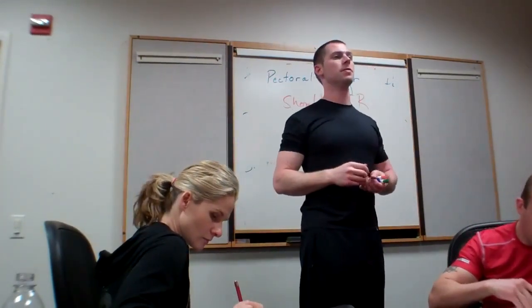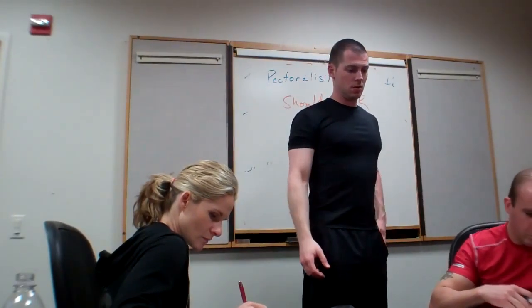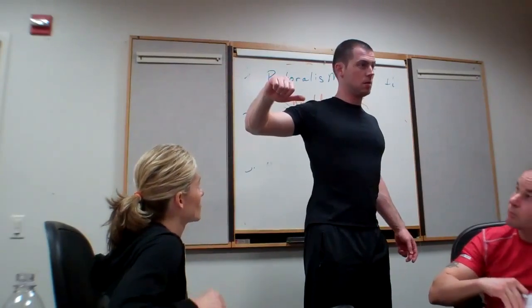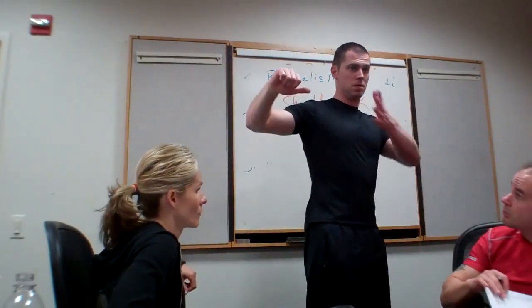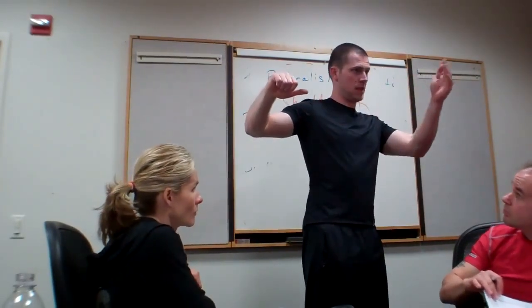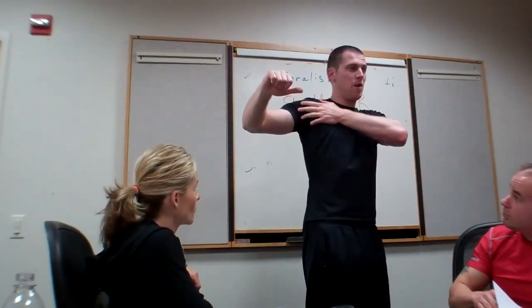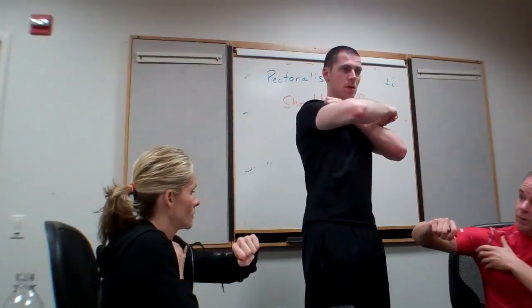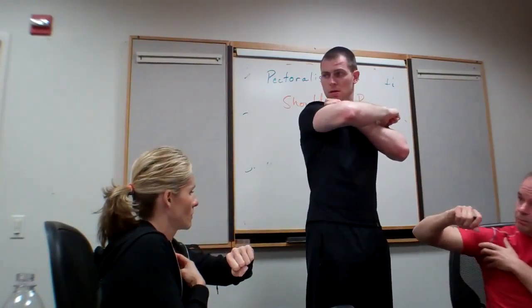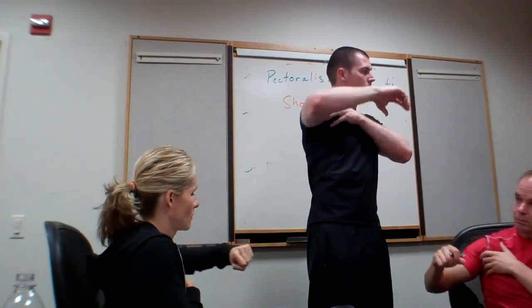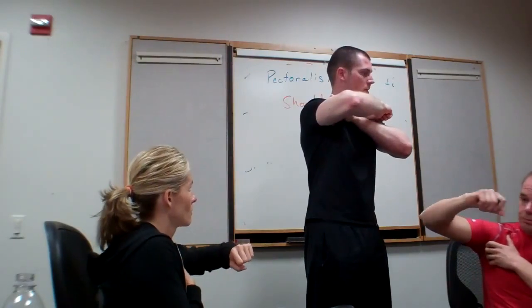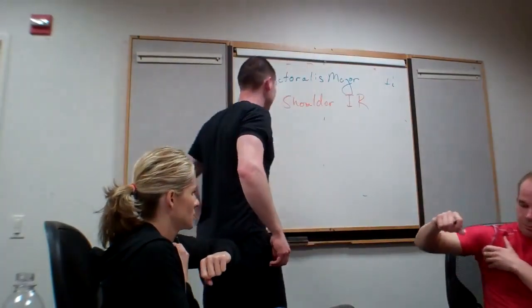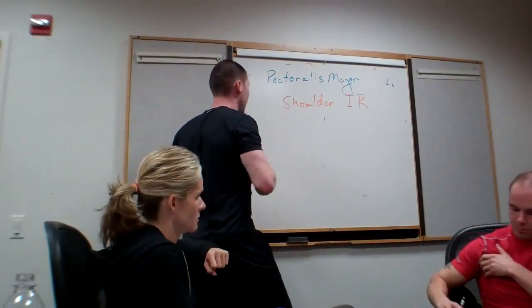Let's talk about some other stuff. If I put my arm like this, it stretches my pec. Now where is it going to pull my arm? This way. What is this joint action? Horizontal adduction. Those are the two big ones for the pec.